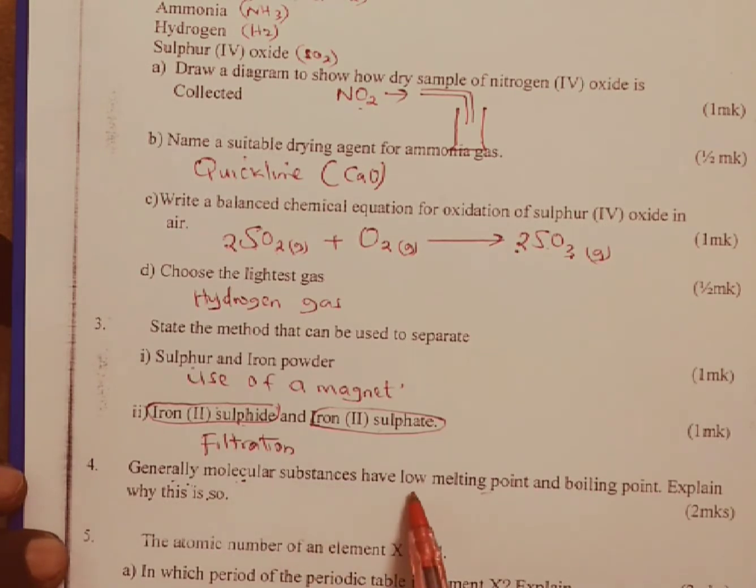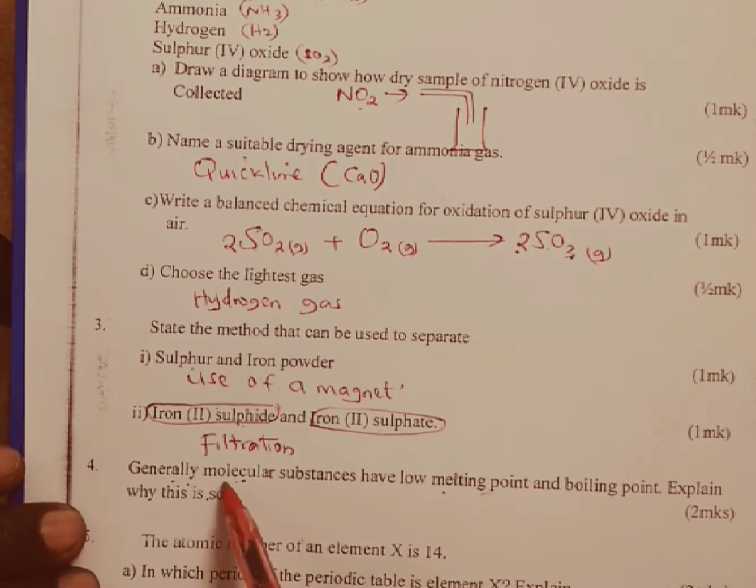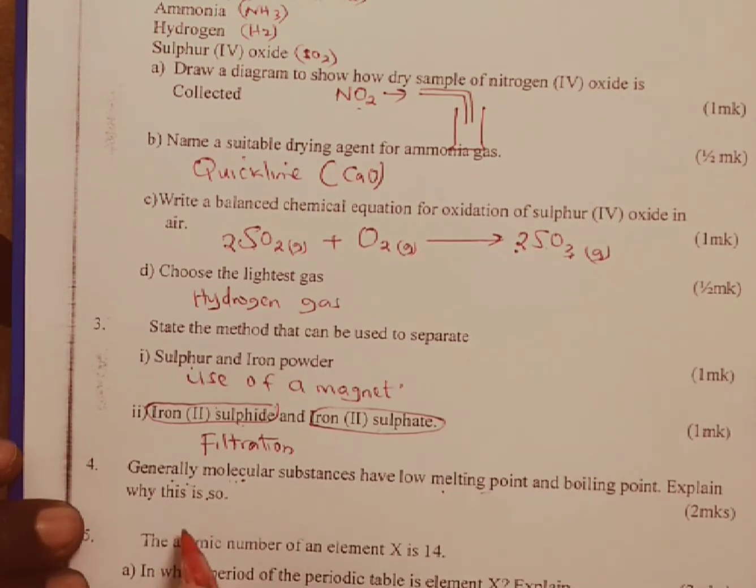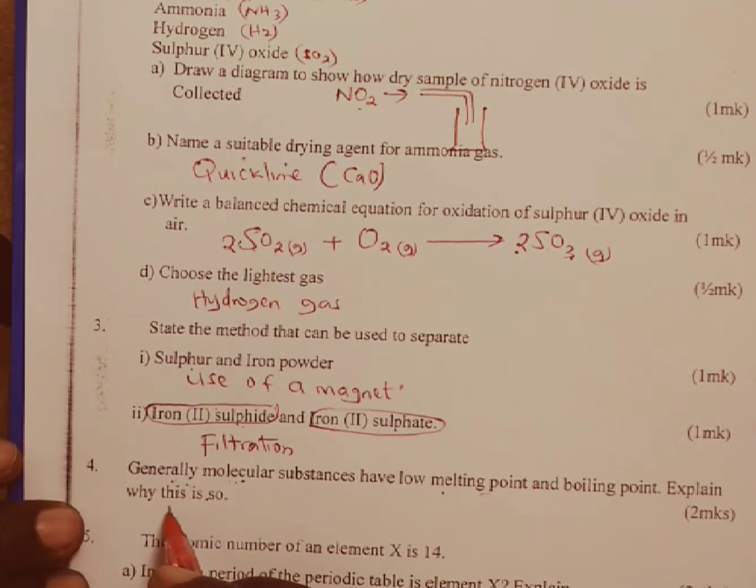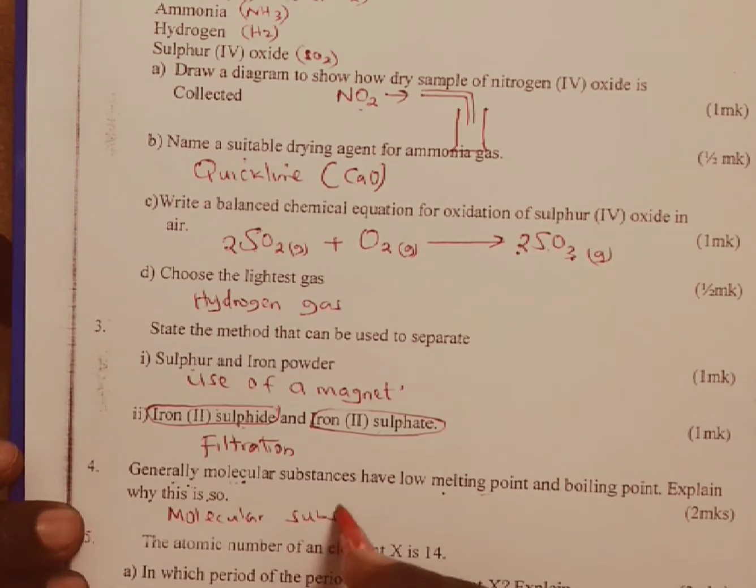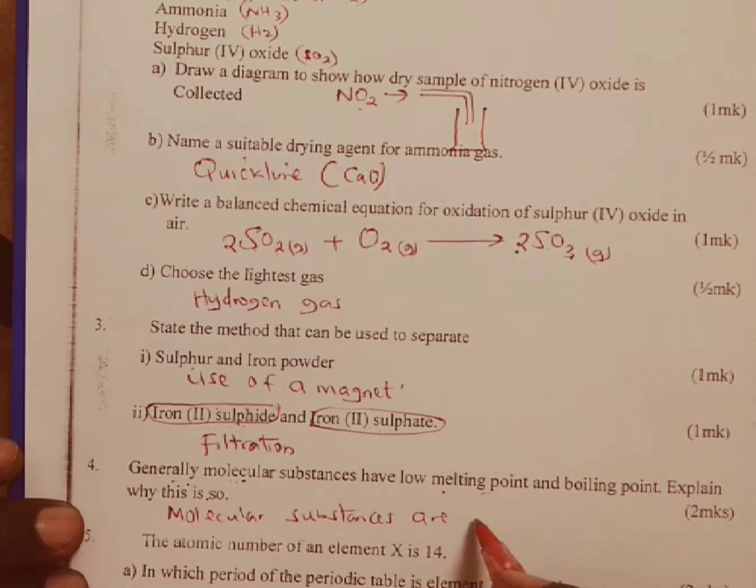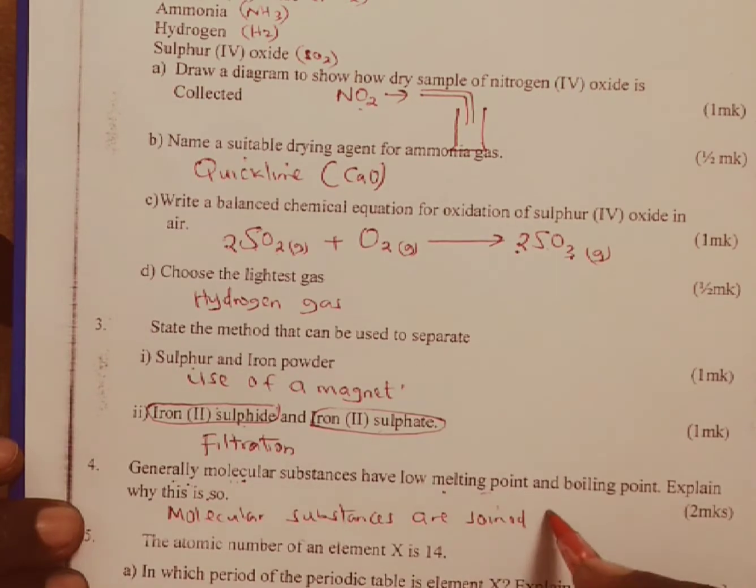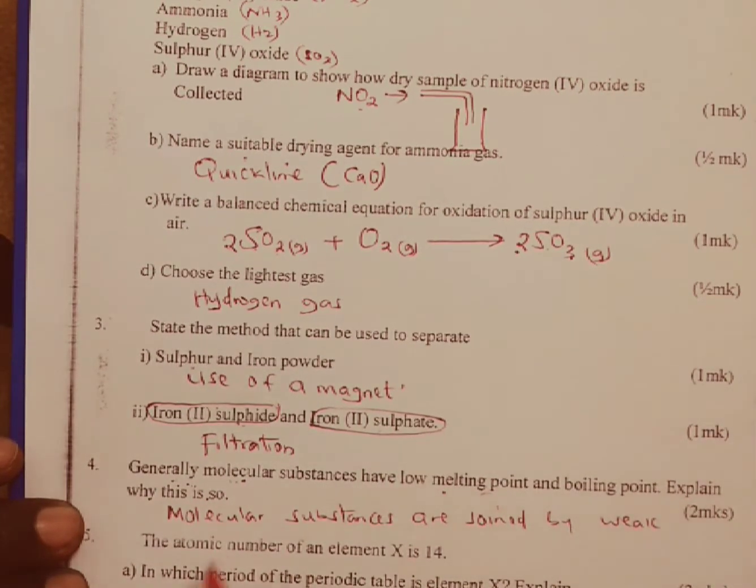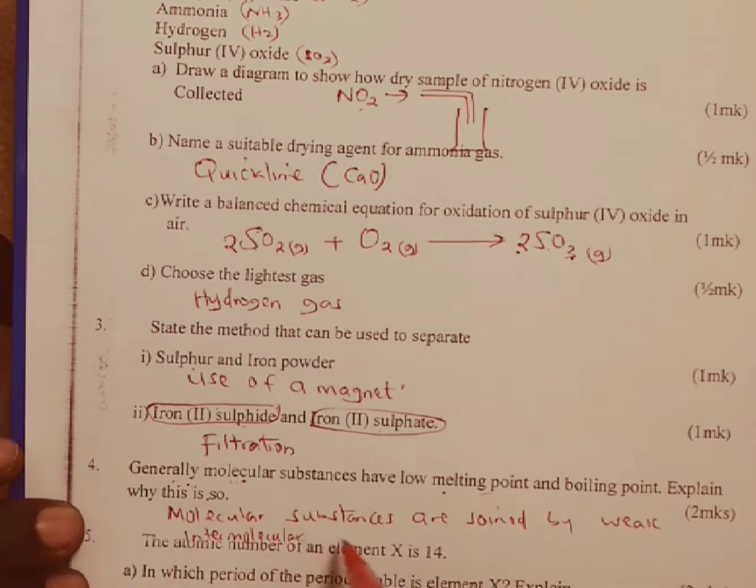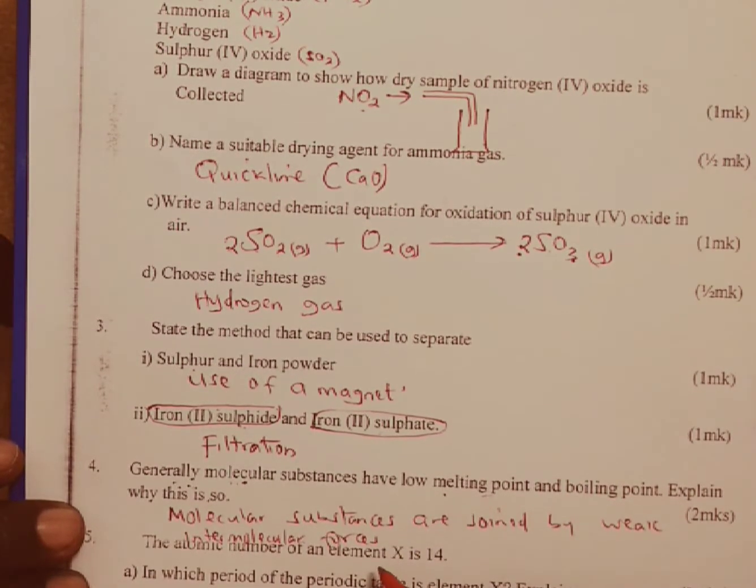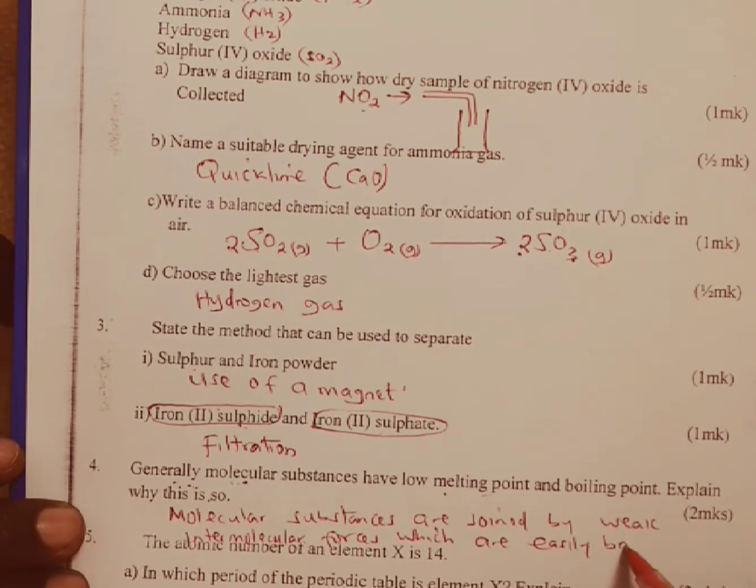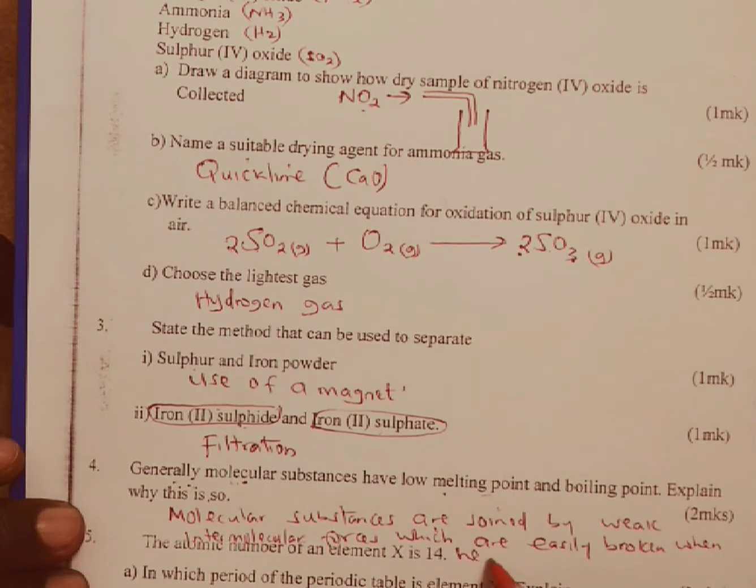Question four: generally molecular substances have low melting point and boiling point. Explain why this is so. Remember molecular substances exist as either liquids or gases. Molecular substances are joined by weak intermolecular forces, which we can call Van der Waals forces, which are easily broken when heated.